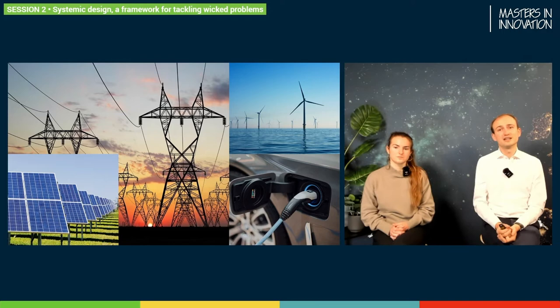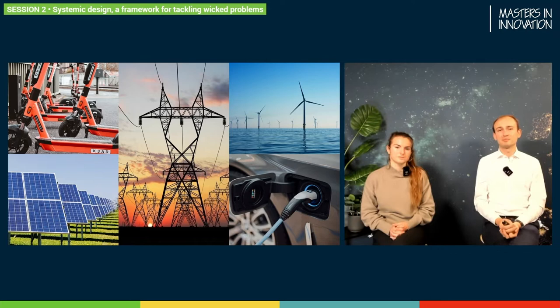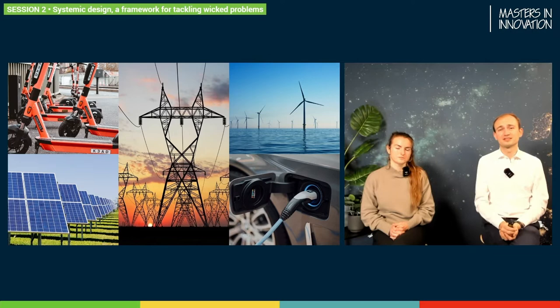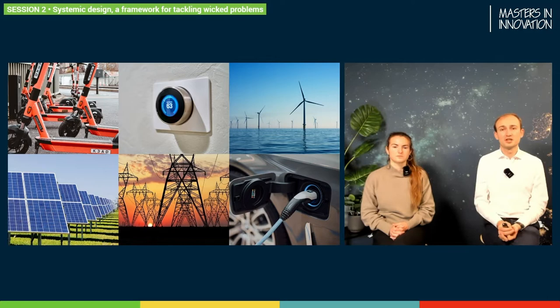Not only on the production side do these power grids face changes — also on the consumption side. We see much more electric vehicles taking lots of electricity at moments where no one before consumed that much. And not only cars — there are many new electric mobility options that consume electricity at what first seems quite irregular moments, considering the previously static nature of those power grids. It's also the electricity we consume in our houses, controlled by smart algorithms which we don't even control ourselves.